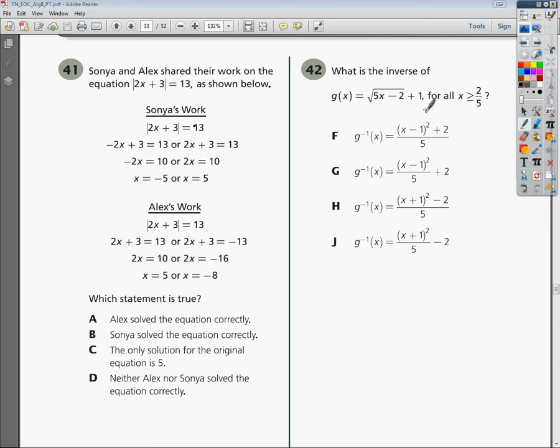Because if it's both 5, then Sonia and Alex would have gotten 5. But they didn't. So it seems C and D may be in a little bit of dispute. Anyway, we're going to look at their work.